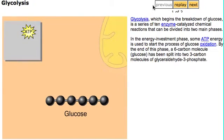Glycolysis, which begins the breakdown of glucose, is a series of ten enzyme-catalyzed chemical reactions that can be divided into two main phases.